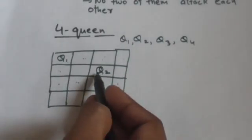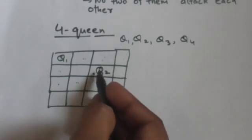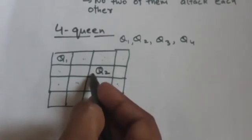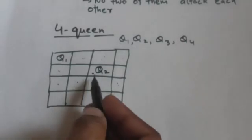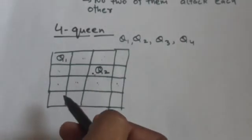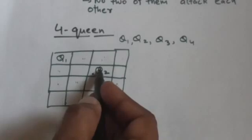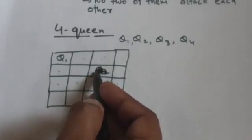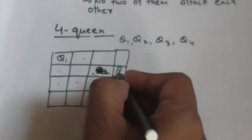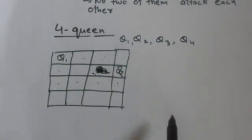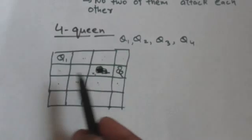So we will backtrack to the previous state and try the next option for queen Q2. The other option for Q2 is the fourth square, so we place Q2 there. Now we have to place queen Q3 in the third row.